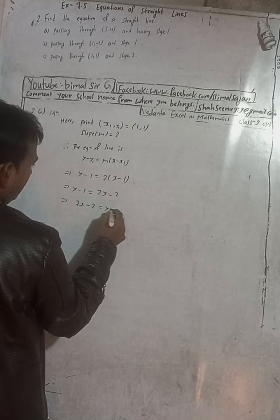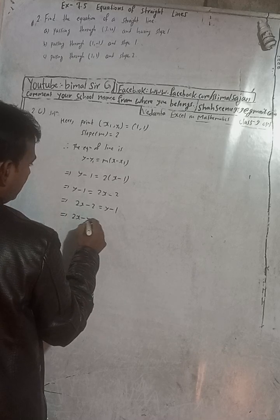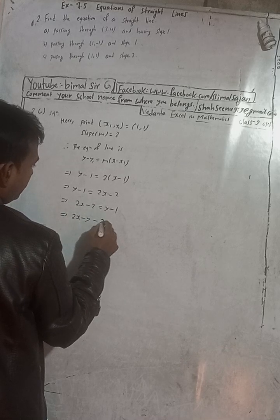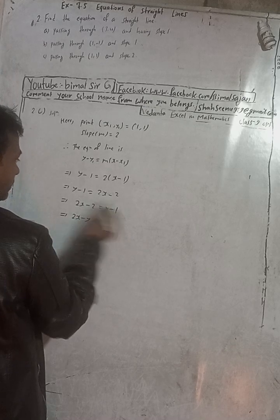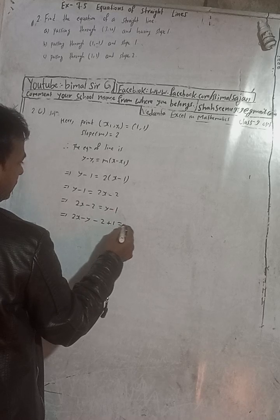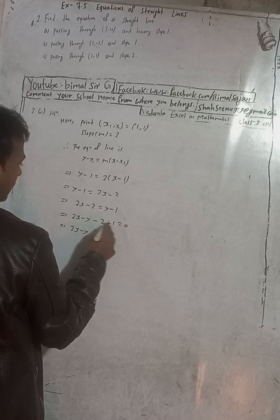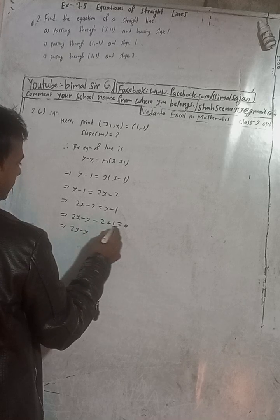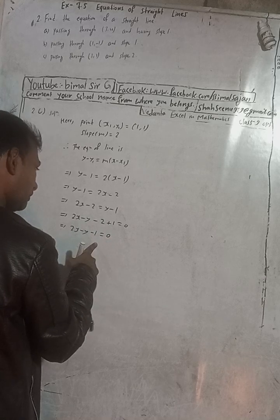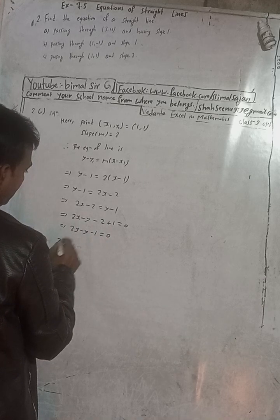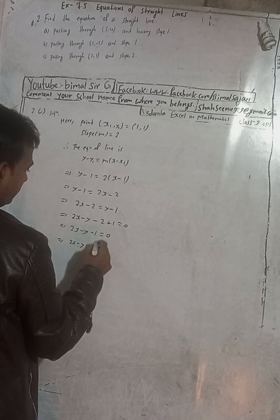Since 2x is positive on the right side, shift everything to the left. So 2x minus 2 equals y minus 1. Rearranging: 2x minus y minus 2 plus 1 equals 0, which gives 2x minus y minus 1 equals 0. You can also write this as 2x minus y equals 1. The answer in the book is 2x minus y equals 1.